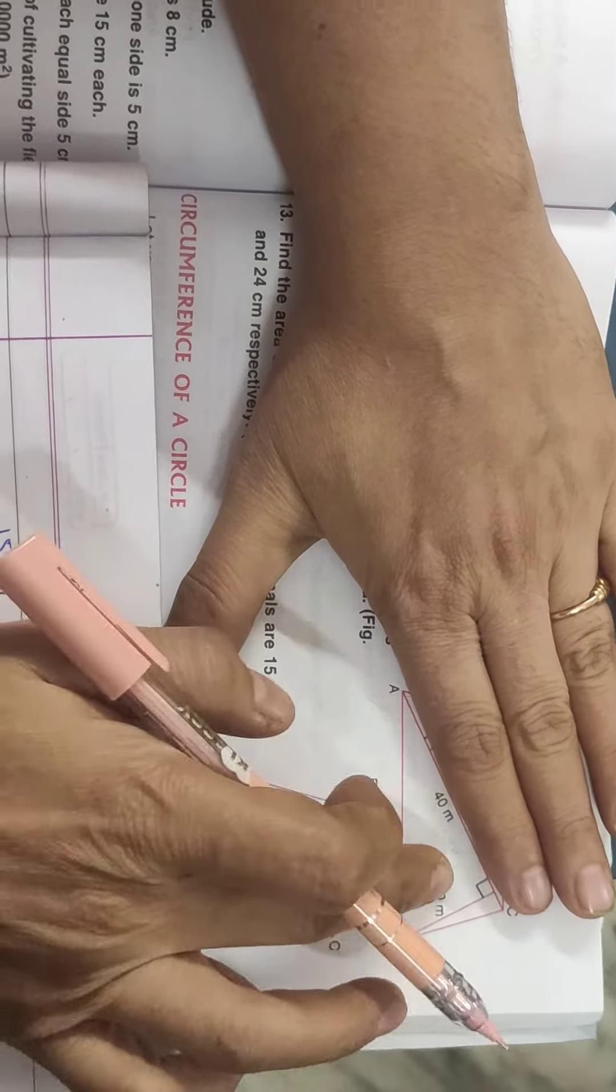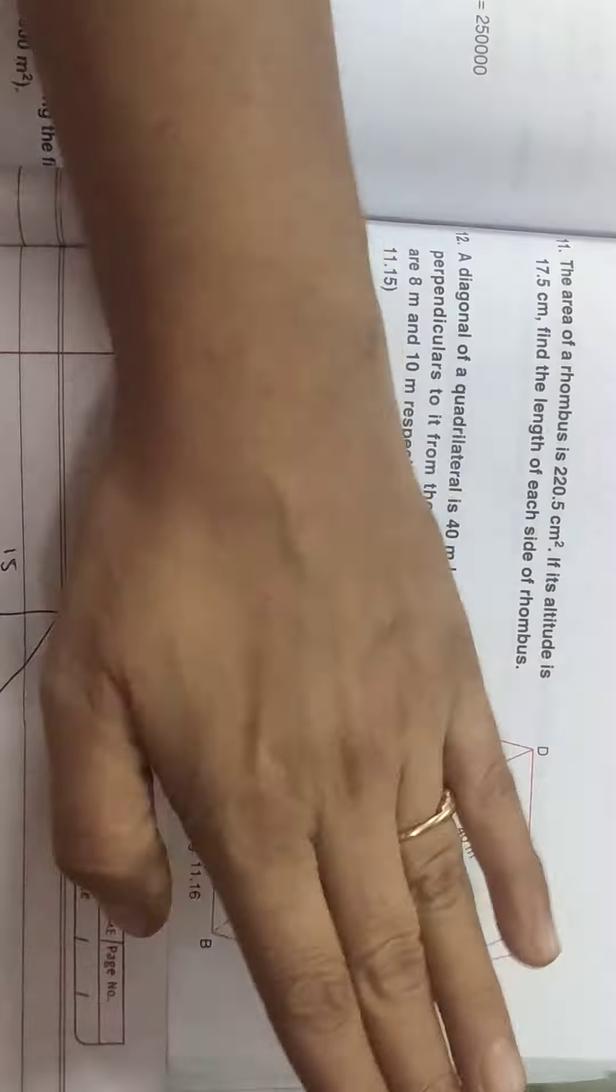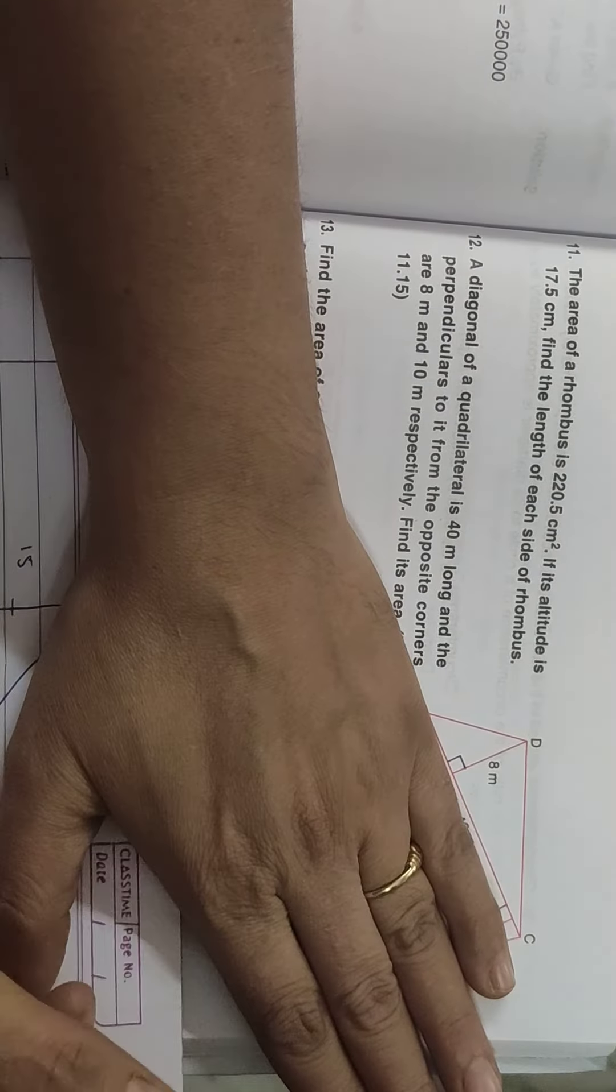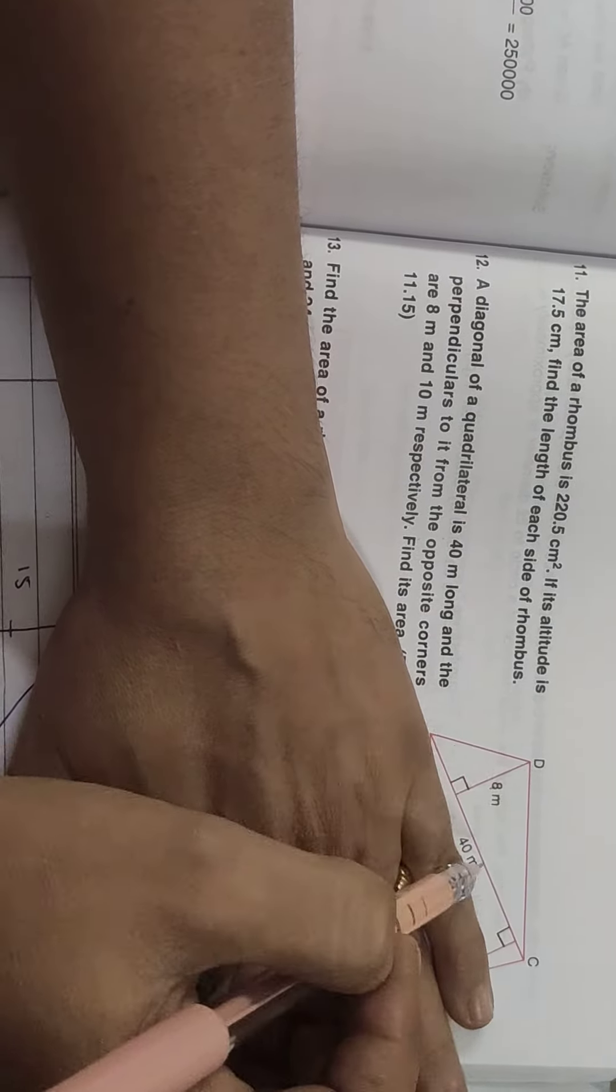I can remove this area of this triangle. The height is this. The base is this. I will remove this. This is a triangle. I can remove this area of this triangle. Half 8 into 40.